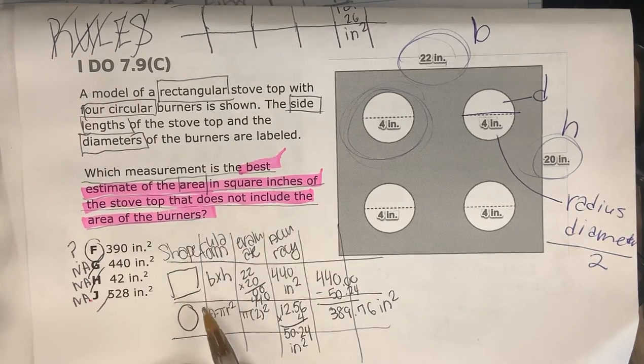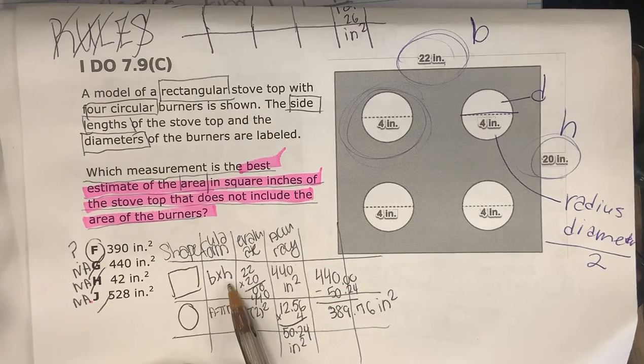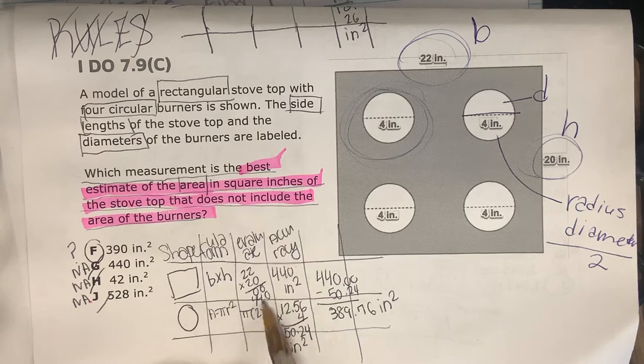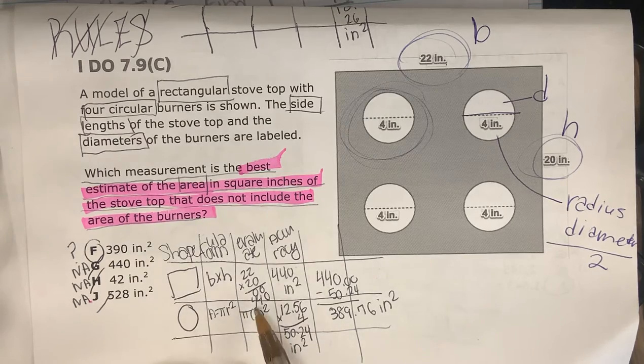So we have the shape of a square. The formula is base times height. We evaluate the base times the height, which is 22 times 20, which is 440. This is going to be in inches squared.